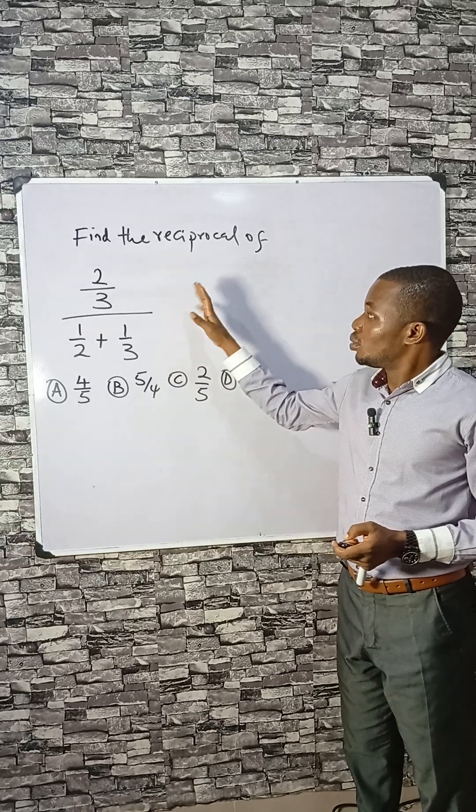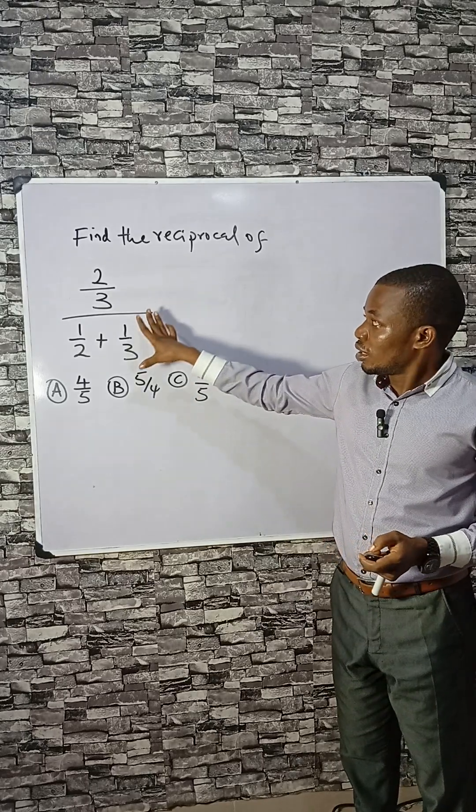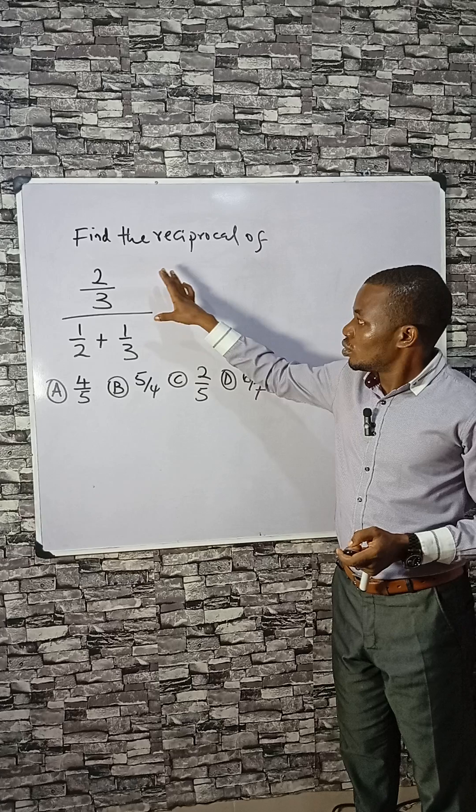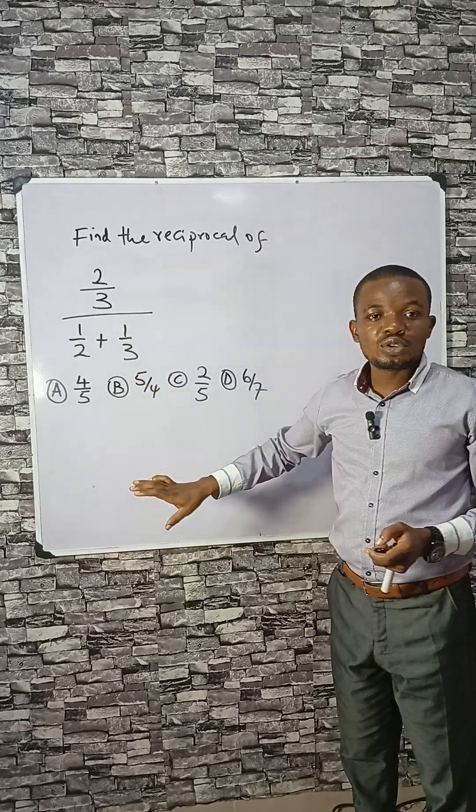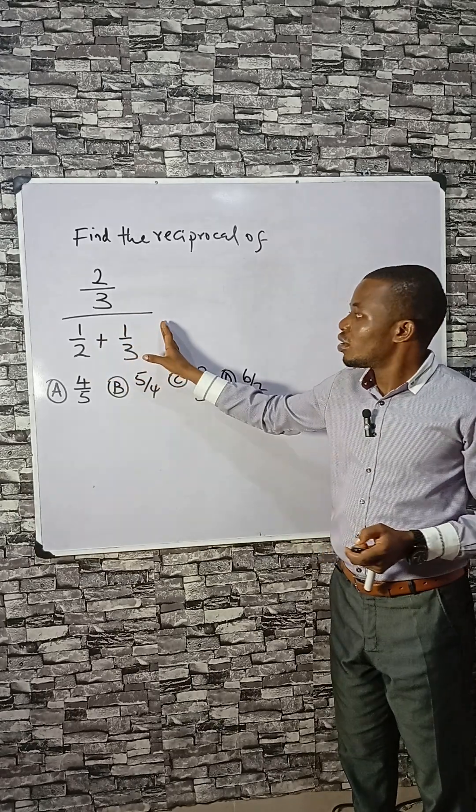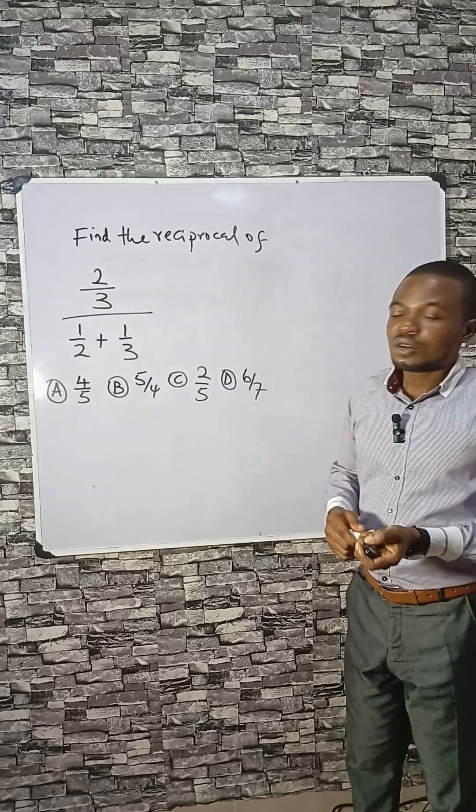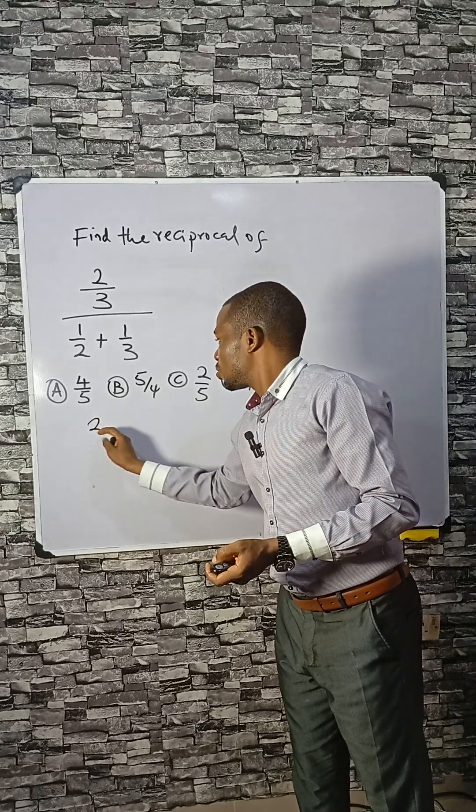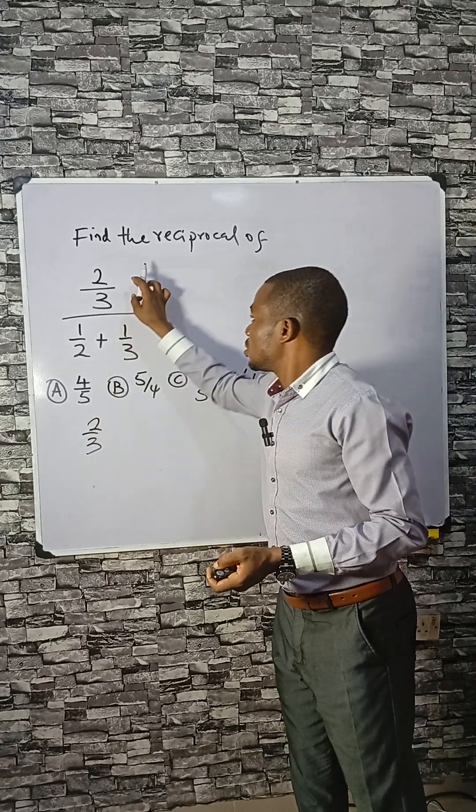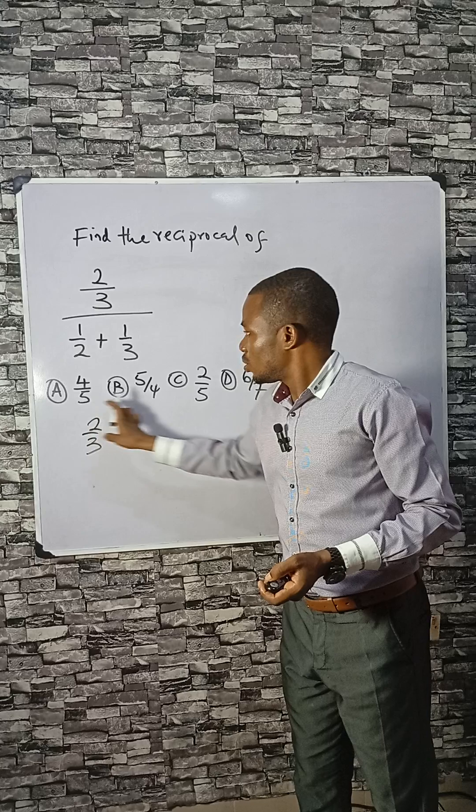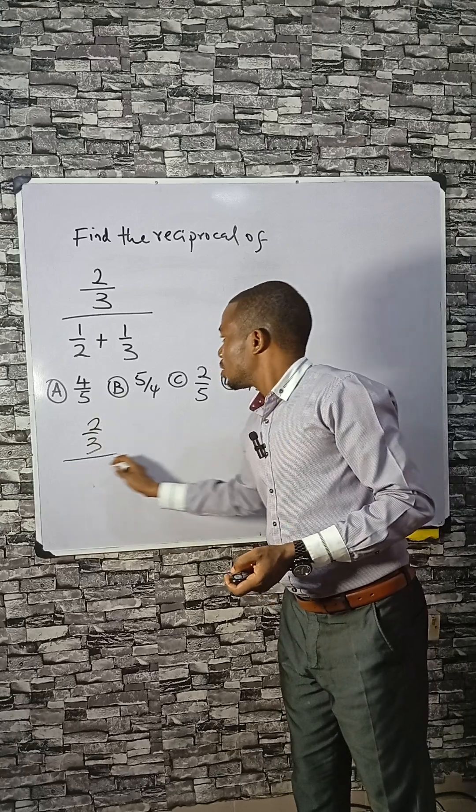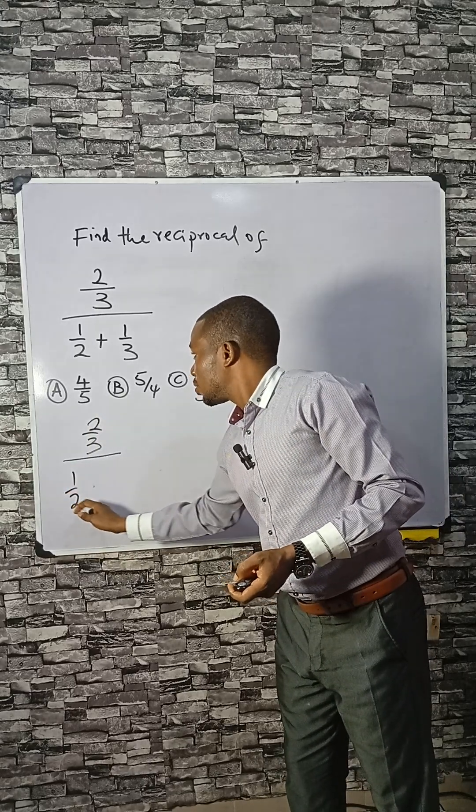You need to pay attention to simple arithmetic, simple operations like this. We are asked to divide this by this. What you need to do is resolve this to a single fraction, then you divide. So the first thing: 2 divided by 3, which is this. One of either this or this is correct. Let's say divided by one-half plus one over three.